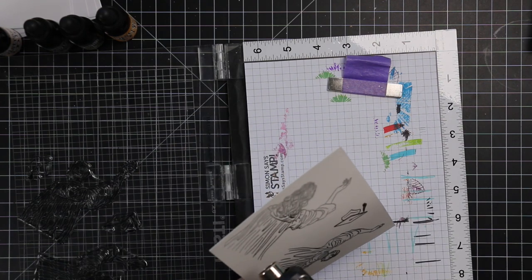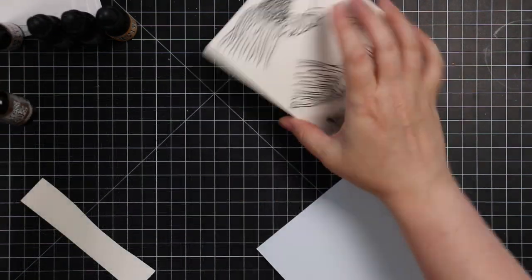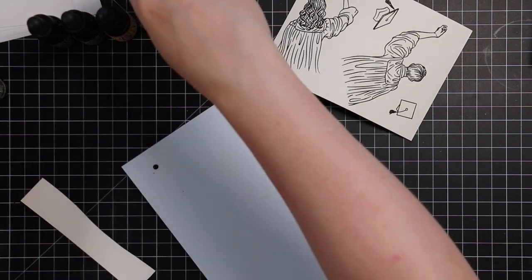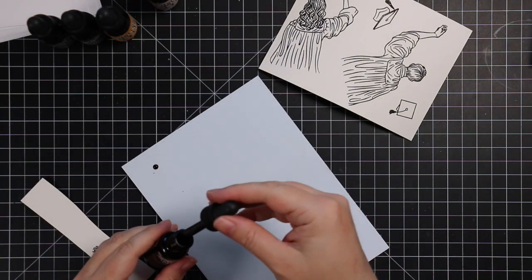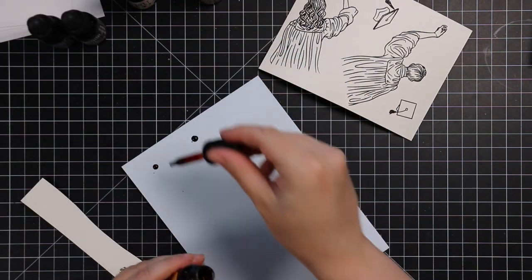Plus, VersaFine Clair ink, because it's a slower drying ink, it needs some time to dry or you could heat set it. I'm also very bad at smearing things, so I heat emboss. I just heat embossed the images with Wow's Clear Matte Dull embossing powder.